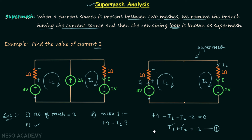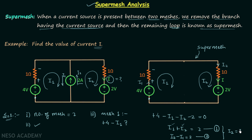So far we have one equation and two unknowns. For the second equation, focus on the current source: it provides two amperes of current in a specific direction. Current I1 flows in one direction and I2 flows in another direction. Since the two-ampere current is in the same direction as I2, we get I2 minus I1 equals two. Adding the first and second equations gives us I2 equal to two amperes, which is the current I we were supposed to find.